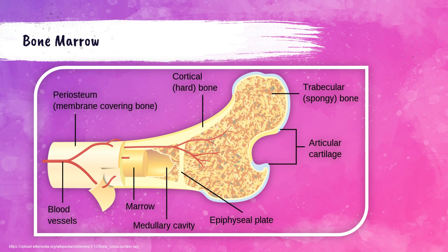The bone marrow is one of the largest organs within the body and consists of two types: red marrow and yellow marrow. The red marrow is considered hematopoietically active, meaning it is actively producing blood cells. In an adult patient, the red marrow is found in the long bones, bones of the pelvis, sternum, skull, scapula, vertebrae, and ribs. The yellow marrow is hematopoietically inactive, meaning it's not actively producing blood cells — it's mainly composed of adipocytes, which are fat cells. In response to increased demand for blood cells due to something like blood loss, the yellow marrow can revert back to active red marrow to start producing more blood cells.